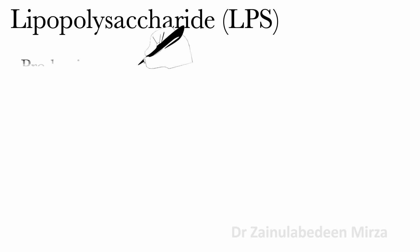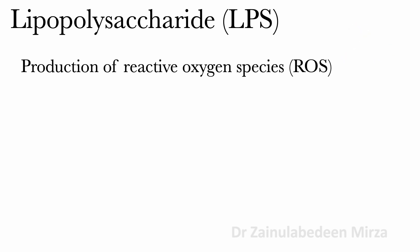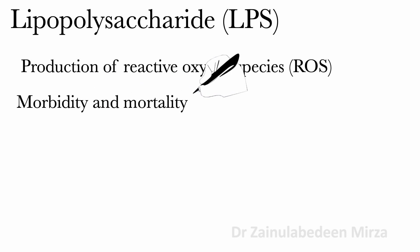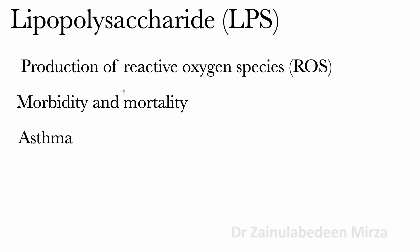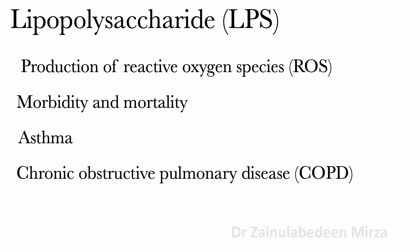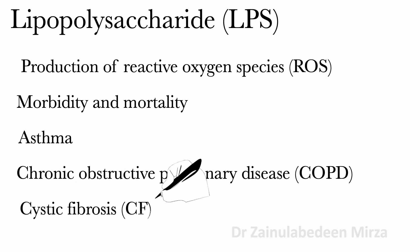The production of reactive oxygen species (ROS) can be stimulated by LPS and gel-forming mucin in epithelial cells, and this is associated with morbidity and mortality of patients with asthma, chronic obstructive pulmonary disease (COPD), and cystic fibrosis (CF).